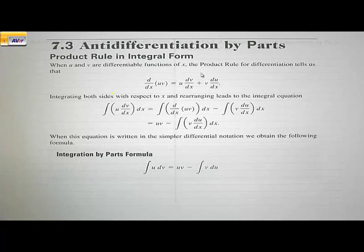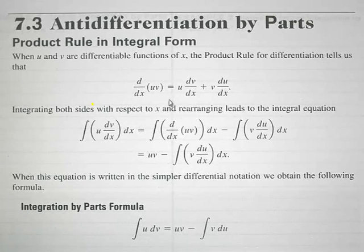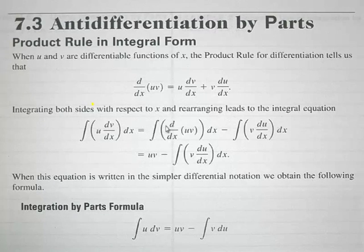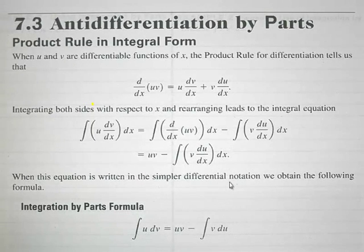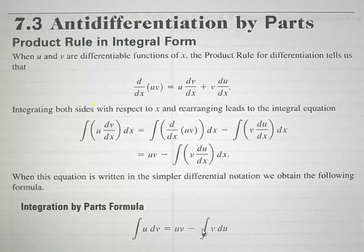If we subtract over the v·(du/dx), we get d/dx(uv) minus v·(du/dx). Then if we integrate both sides, we get the integral of u times the derivative of v equals the integral of d/dx(uv) dx, which means we have uv minus the integral of v·(du/dx) dx. When written in simpler differential notation, the formula becomes: the integral of u dv equals uv minus the integral of v du.